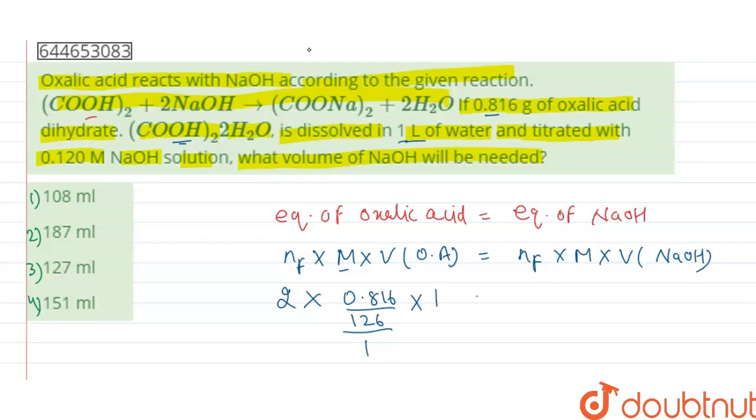So, multiplying by 1 equals the N-factor for NaOH, which is 1, times molarity, given as 0.120, times volume, which we have to find.